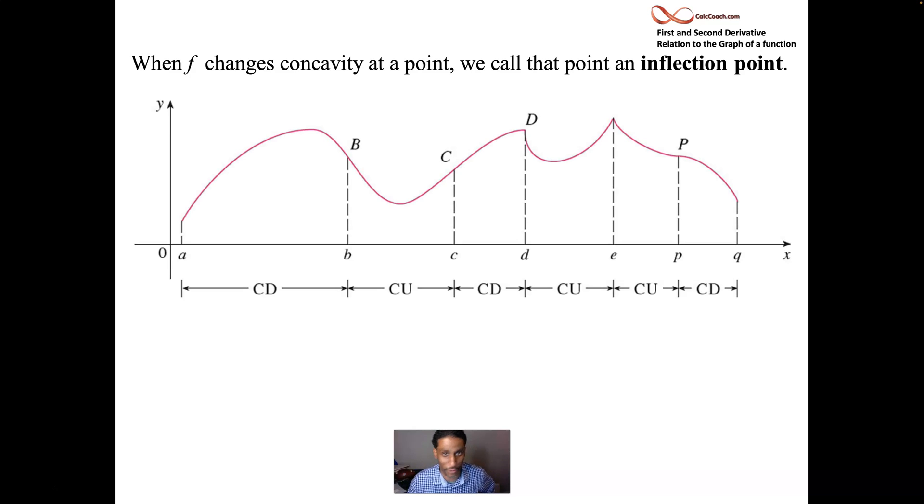Here's a graph with a bunch of letters labeling x values. And at those letters, we have different shapes on our function on those intervals there. But on some of them, we have changing shape. Concave down like a frown between A and B. At B, it changes to concave up like a cup. At C, it changes back to concave down.